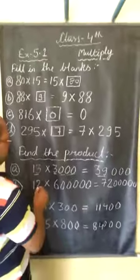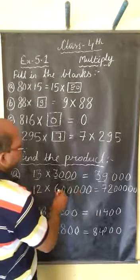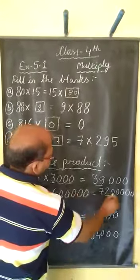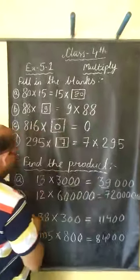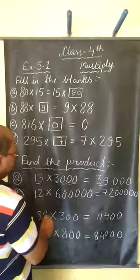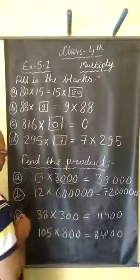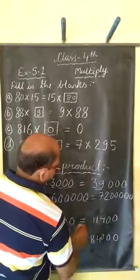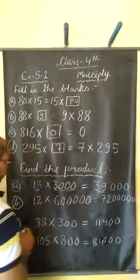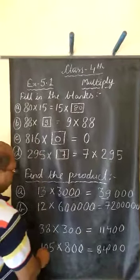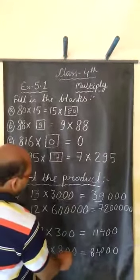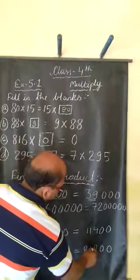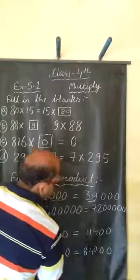Next, 38 multiplied by 300: we first multiply 38 by 3 to get 114, then put 2 zeros after, giving us 11,400. And for 105 multiplied by 800: we multiply 105 by 8 to get 840, then add 2 zeros to get 84,000. That's all.